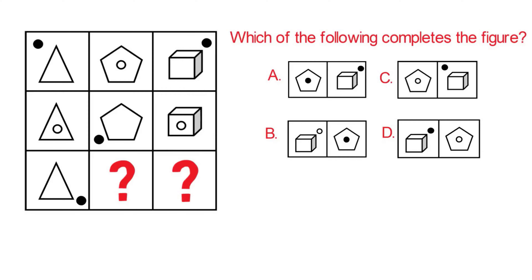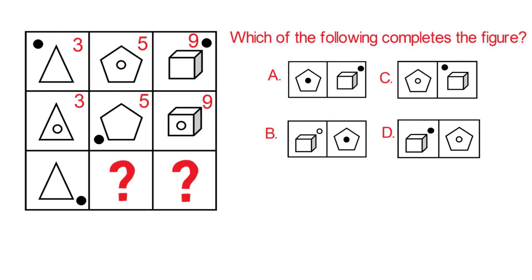The first pattern is that the shapes' lines are in order: 3, 6, and 9. A triangle has 3 lines, a pentagon has 5 lines, and a cube has 9 lines. The second pattern is that the small circle inside the shape alternately rotates from being inside to being outside. The last pattern is that the black circle outside the shape also changes its location. Following these patterns, the correct answer is choice C.